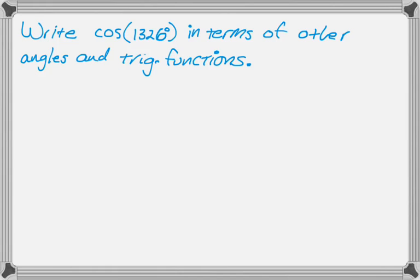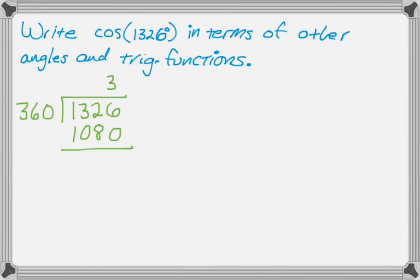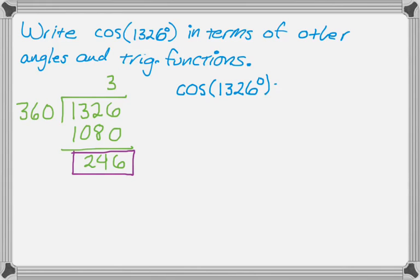I'm going to write it in terms of cosine first, so the first thing I'll do is find the principal coterminal angle. I've got 1,326 and I'm going to divide by 360. I know that 3 times 360 is 1,080, so I subtract 1,080 from 1,326 and end up with 246. That tells me the cosine of 1,326 degrees equals the cosine of 246 degrees.